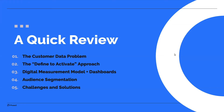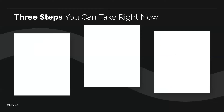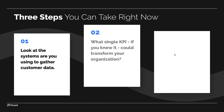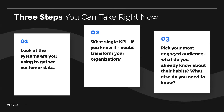Let me leave you with three steps you can take right now to start digging in on everything we've discussed and create some forward momentum. First, look at the systems that you're using to gather data and think about what's working, what's not. Two, ask yourself what single KPI, if you knew it, could transform your organization. And finally, pick your most engaged audience — what do you already know about their habits, and what else do you need to know? Thank you.